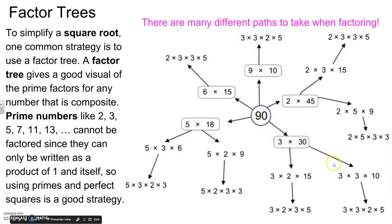Or I could go 3 times 30. 3 times 30 might go 3 times 3 times 10, that was 30. And then 10 is going to break down to 2 and 5. So no matter which path you take when you do prime factorization, you'll always end up with all the same factors here. The idea for us is to fully simplify these values.